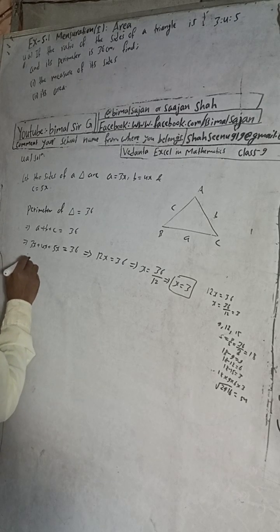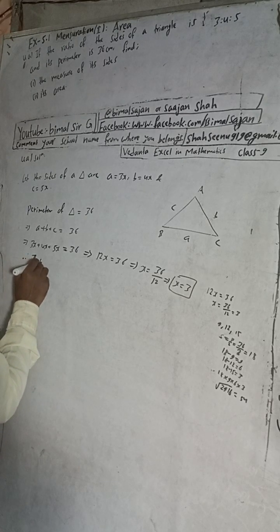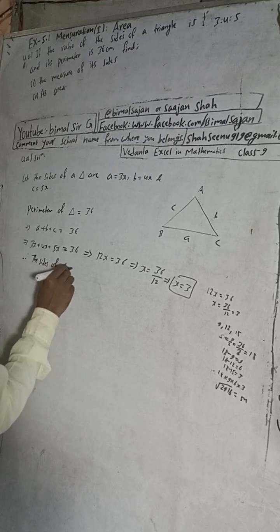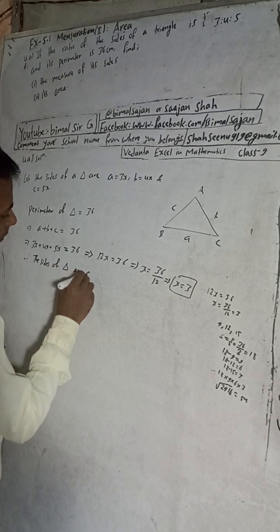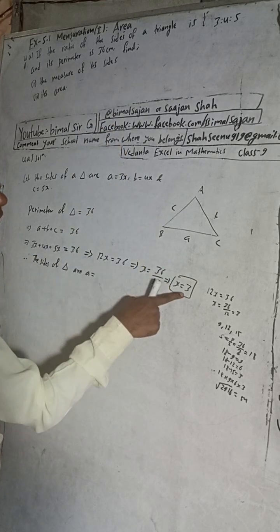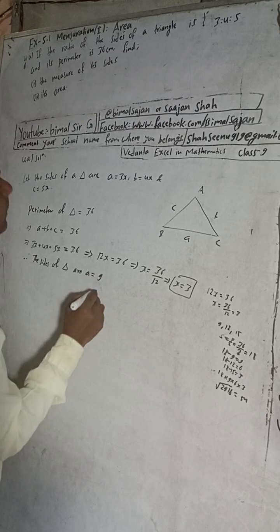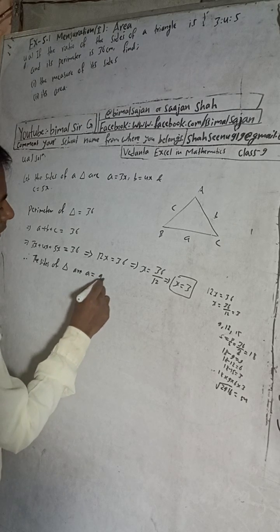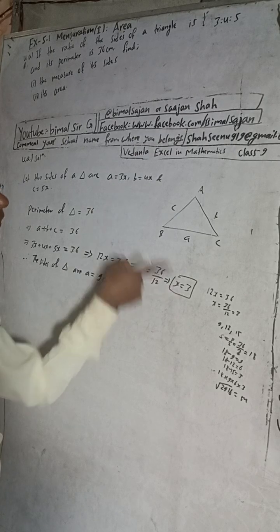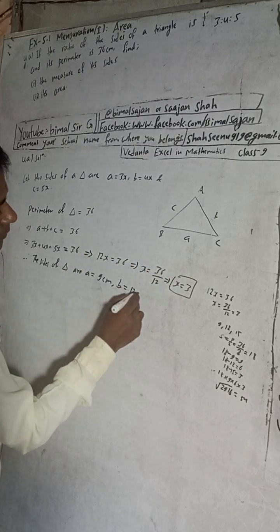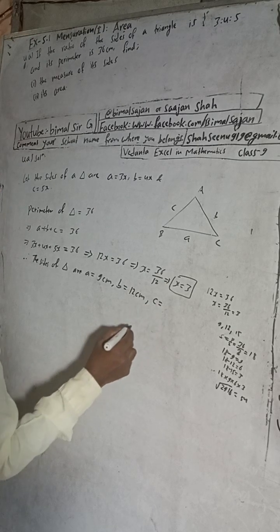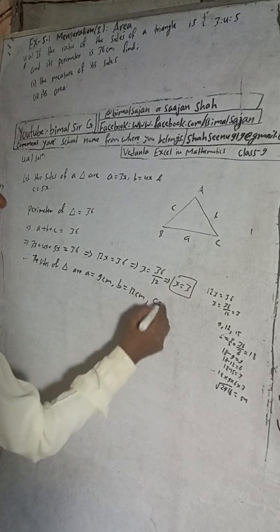Therefore, the sides of the triangle are: a = 3x = 3 × 3 = 9 cm, b = 4x = 4 × 3 = 12 cm, and c = 5x = 5 × 3 = 15 cm.